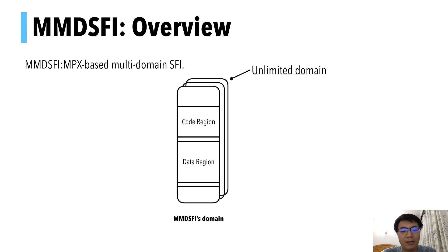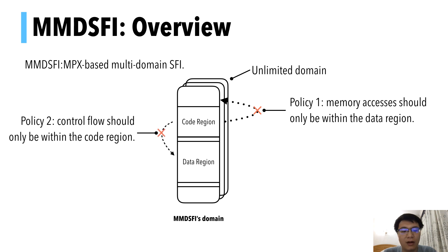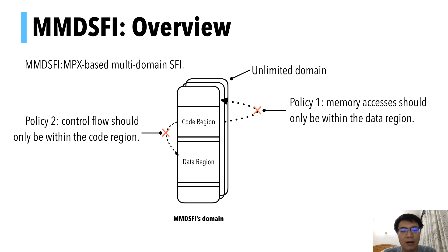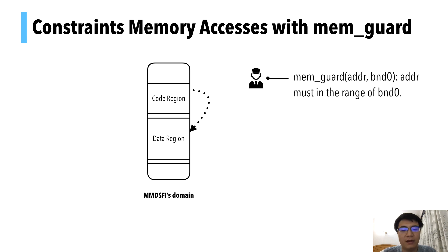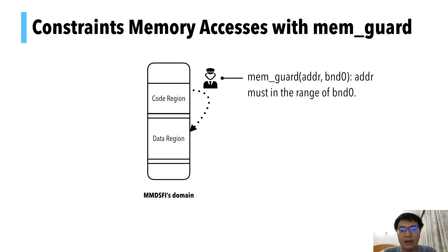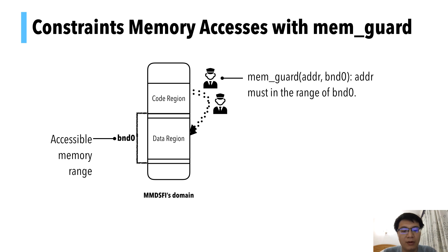MMDSFI defines two policies. First, memory access should only be within the data region. Second, all control flow can only jump inside the code region. To constrain memory access, we use memory guards. Before every memory access, we insert a memory guard that takes an address as input and checks if this address is within the range of bound zero — which we assign as the accessible range of the domain. The memory guard is implemented using the two bound check instructions. Some guards are redundant and will be removed with range analysis.